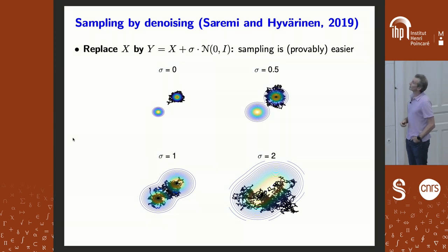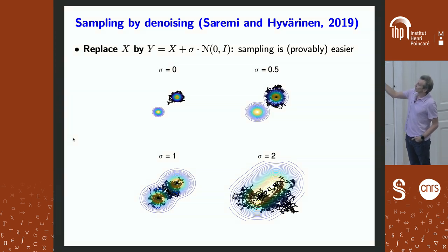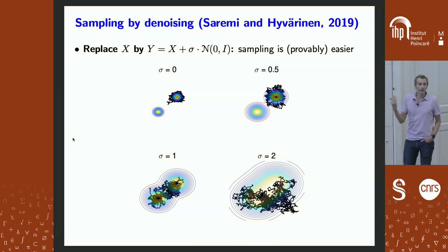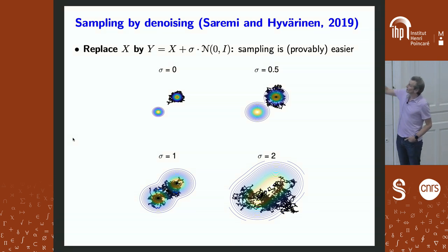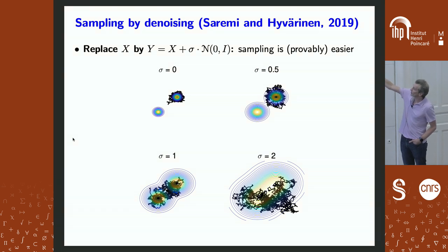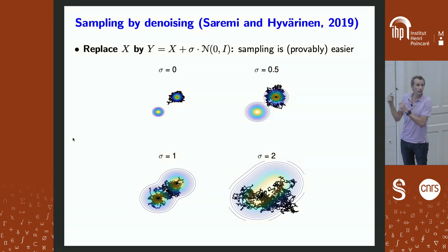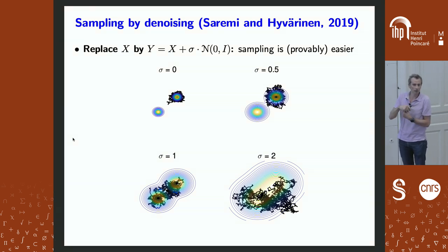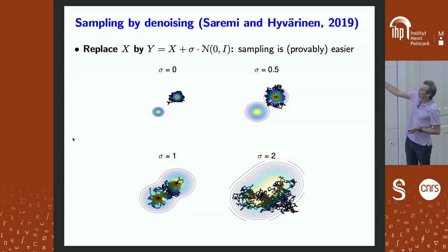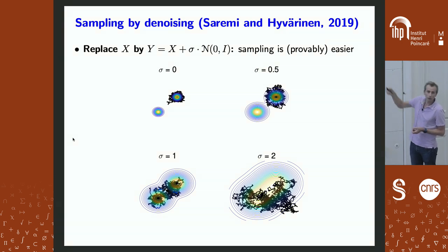The first idea is to sample something which is noisy. The key is: how do I go back? Once I have a sample from the noisy version, I'm very far from a sample from the clean version. So I need a way to go back. You add noise to the sample, then you have to denoise it — denoising means I have a sample of the noisy data and I need to go to the clean data.